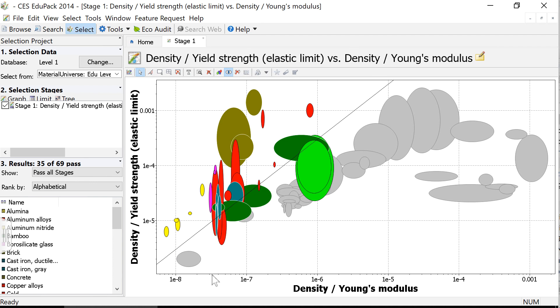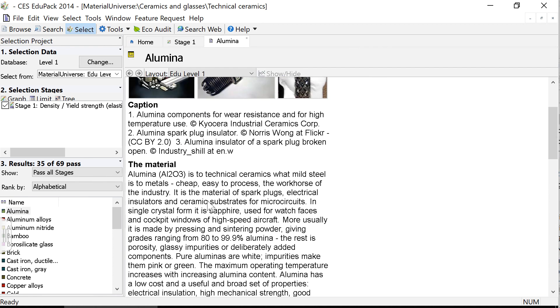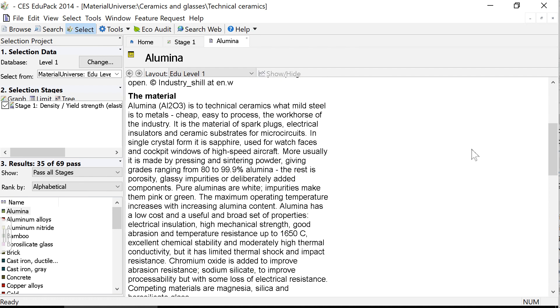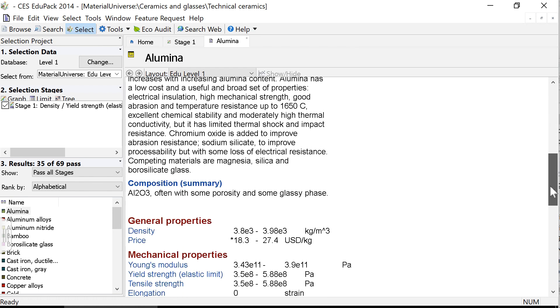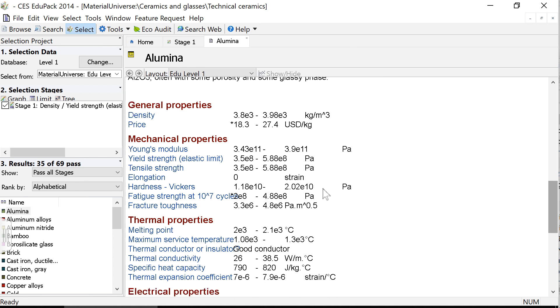Now we can check and see what units are being calculated. For instance, if I just double-click on Alumina, it brings up the description, and if we scroll down to the material properties, we see that the density has units of kilograms per meter cubed, Young's modulus has units of pascals, and the strength also is going to have units of pascals. So these are the units that we want.